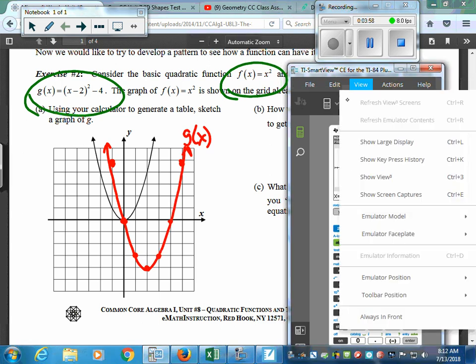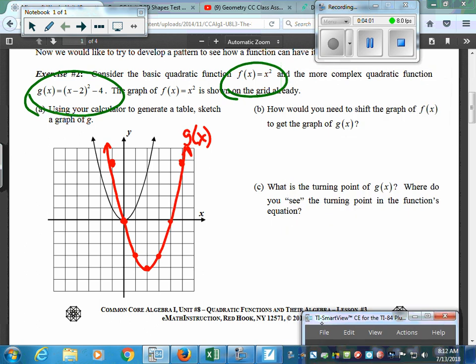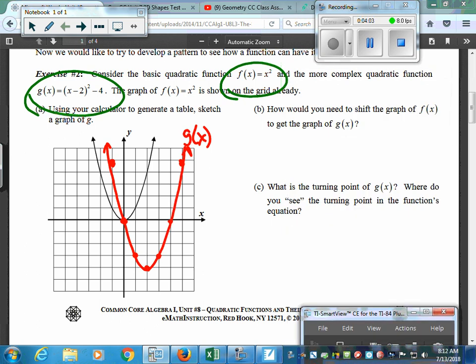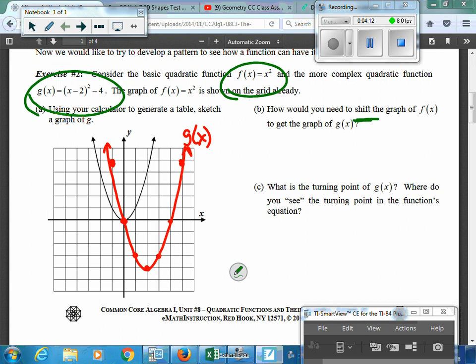Now, going to the question itself, b and c, it says, how do you need to shift the graph of f(x) to get g(x)? Well, when we talk about shifting, you want to give specific directions. You want to say it went left 3. You want to say it went up 2. You don't want to say it went left because that's not specific enough depending on the question. So for this one, to get from our original turning point, which was 0, 0, we had to go right 2 spaces. So we went right positive 2. And then we went down 4 spaces.